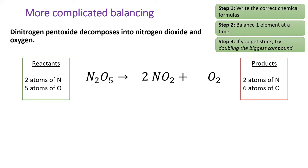Sometimes when you feel stuck like this, it's best to just try doubling the largest compound. In this case, dinitrogen pentoxide. Now we have four atoms of nitrogen on the left, but only two on the right. I'll increase the coefficient on NO2 from 2 to 4. And with that, the equation is balanced. There are the same number of each atom on the left and right side. Good job.